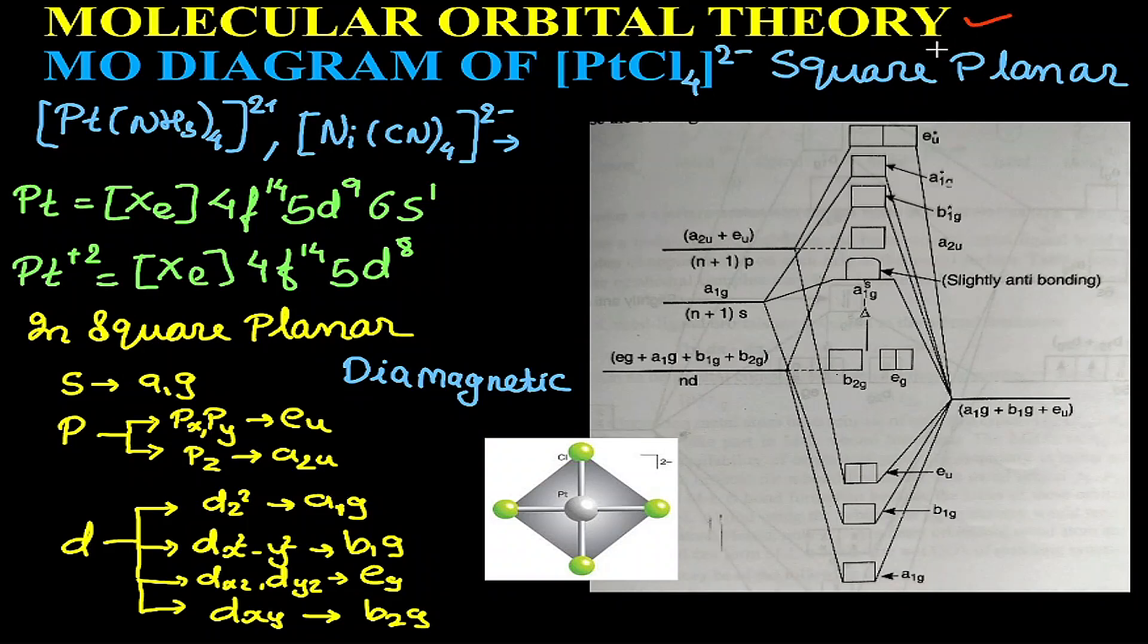Today under molecular orbital theory, we will be discussing the MO diagram of PtCl₄²⁻ molecule, and it is a square planar molecule. Few other examples are Pt(NH₃)₄²⁺ as well as Ni(CN)₄²⁻, so basically all the examples are of d8 systems.